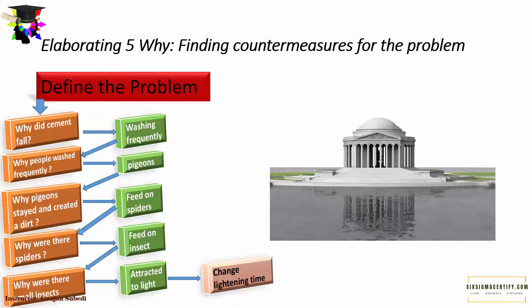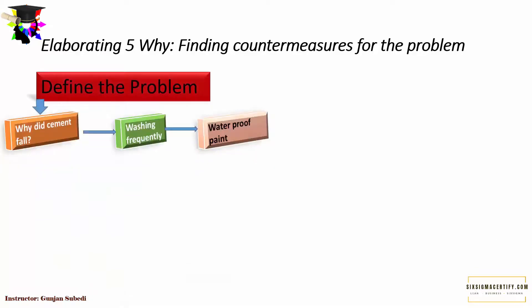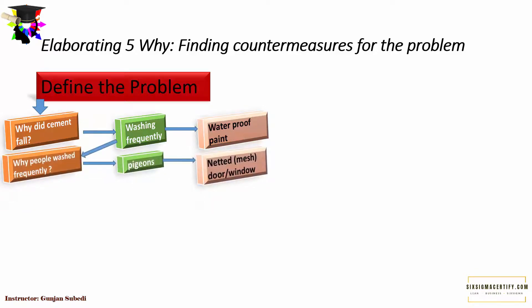We would define the problem and ask why did the cement fall? There could be frequent washing. We would counter the problem of stopping the falling of the cement with waterproof paint. Another question, why did the people wash frequently? It was due to pigeons. So another countermeasure would be to apply a netted mesh so that no pigeons or birds would fly inside the monument. So why did the pigeons stay and create droppings? Because they used to feed on spiders.